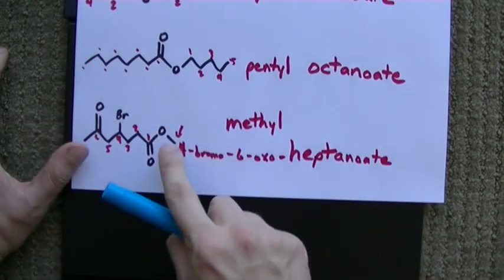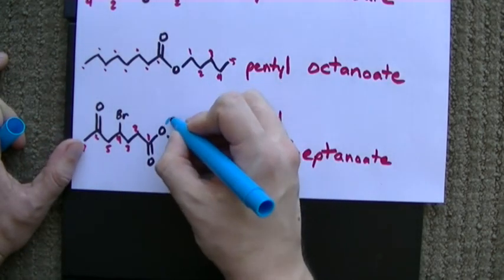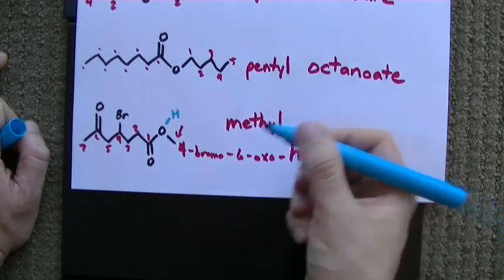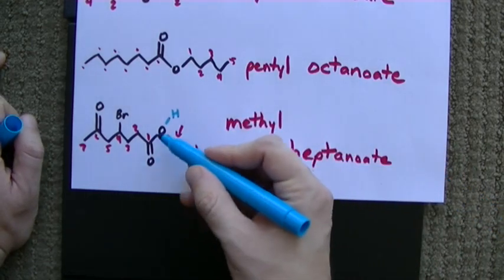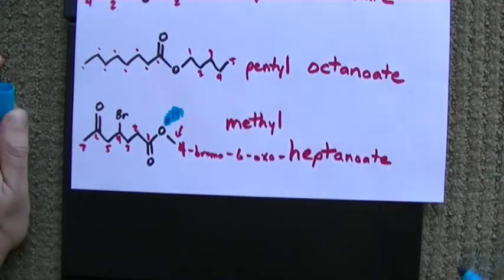You may be wondering, what do we do if there's no carbons connected over here? What if this was just a hydrogen? The answer is, that's not an ester anymore. We call it a carboxylic acid. And you'll name it as a carboxylic acid.